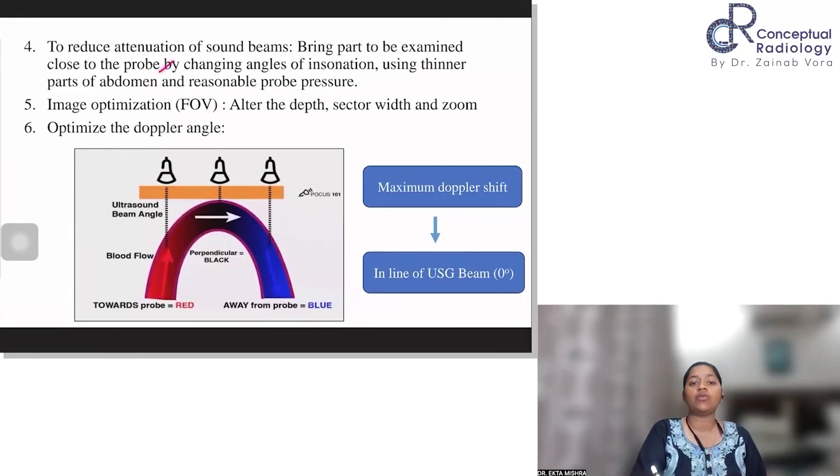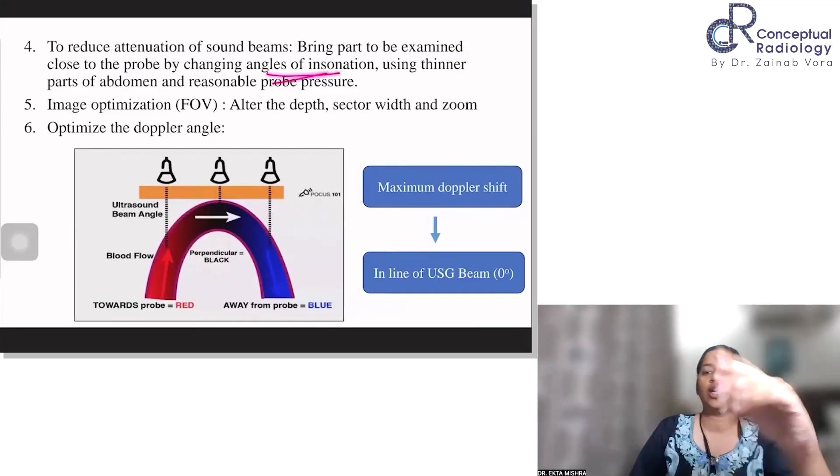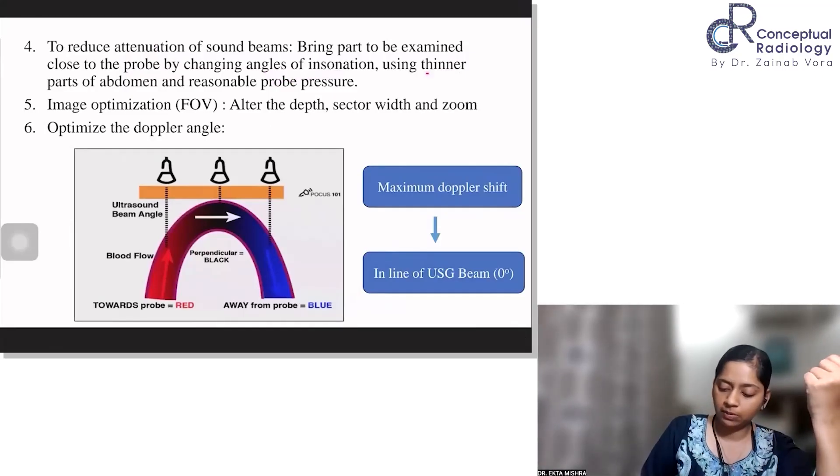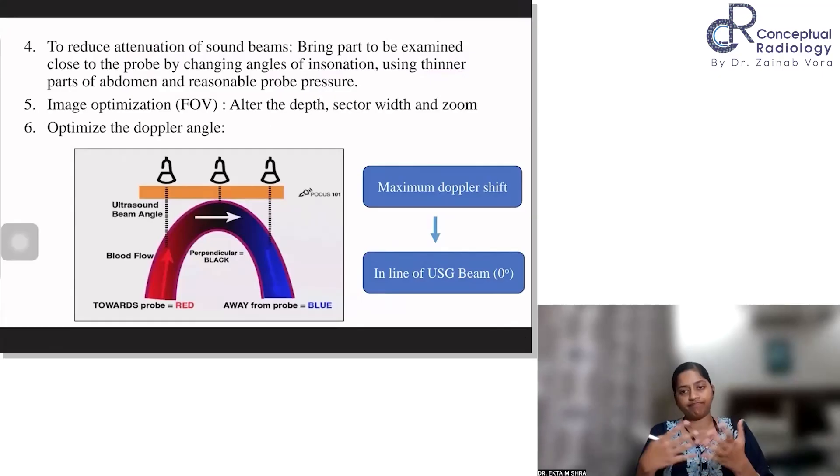Then if you want to reduce the attenuation of sound beams with the same probe and same settings, what can you do? The first thing is you can bring the part which you are examining close to the probe. You try to decrease the distance. How do you do that? You can change your angle of insonation. And especially in the antenatal scans, the thinner parts of the female abdomen can be used like the umbilical window.